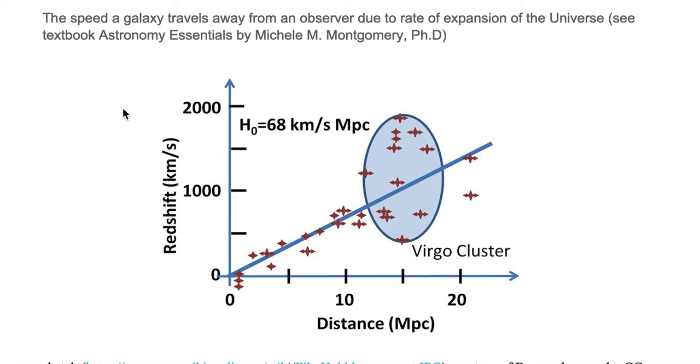Recessional velocity is shown on this graph and is labeled redshift on the vertical axis because they use the technique of redshifts to find the recessional velocity. That's the reason why they labeled it redshift, but it's a speed in kilometers per second as you can see.